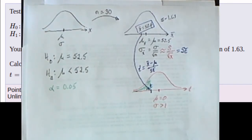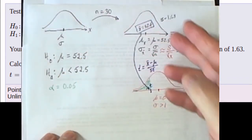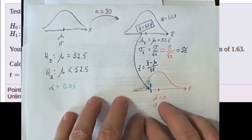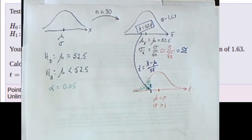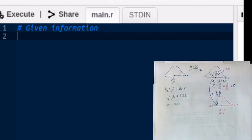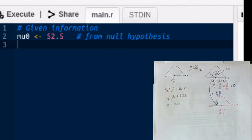Whether this is a problem about means or proportions changes what the three-distribution diagram looks like. Once we've made that decision, we fill out the three-distribution diagram. After that is done, we write a script to calculate the desired values. We begin by putting in the given information — we assume the null hypothesis, so the mean of this distribution is whatever the null hypothesis says, which I'll call mu-zero, equal to 52.5.